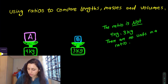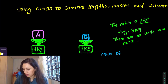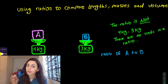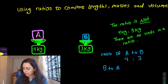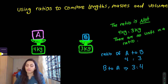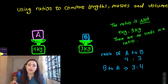So the ratio of object A to object B: because we said A first, we write A first, so it's 4:3. And B to A would be 3:4. If the question asks for the total, then you add them together. It really depends on the question — if you read carefully, you should not get confused.